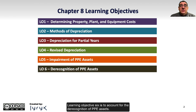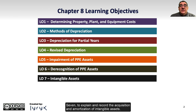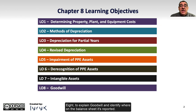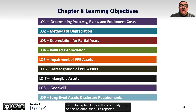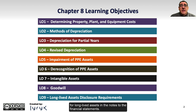Learning Objective 6 is to account for the de-recognition of PPE assets. Learning Objective 7 is to explain and record the acquisition and amortization of intangible assets. Learning Objective 8 is to explain goodwill and identify where on the balance sheet it is reported. And Learning Objective 9 is to describe the disclosure requirements for long-lived assets in the notes to the financial statements.